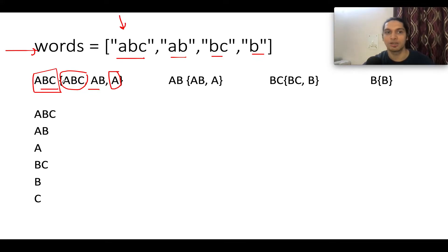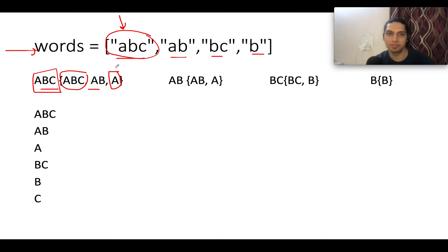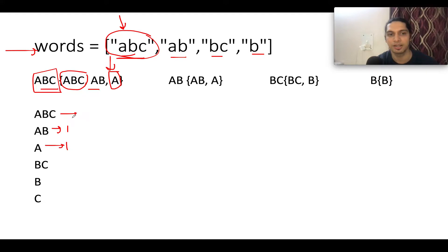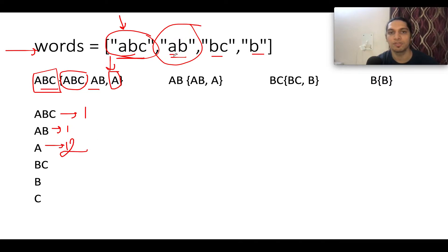Let's start the iteration. The first string is 'abc' and we check the continuous prefix substrings. The first one is 'a', so the score of 'a' gets updated to one. The next is 'ab', so the score of 'ab' gets updated to one. The next is 'abc', so the score of 'abc' gets updated to one. Proceeding ahead, the next string is 'ab' — the score of 'a' gets updated to two and the score of 'ab' gets updated to two.